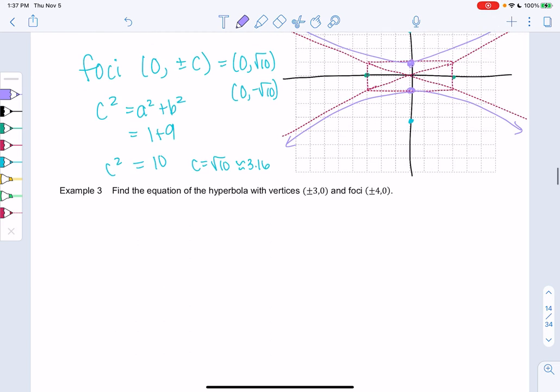So we have a hyperbola with vertices at plus or minus 3, 0 and foci at plus or minus 4. I don't really need the graph, but it does at least help me know if it's vertical or horizontal. So if my vertices are at 3 and negative 3 on the x-axis, that means I have one that goes this way, side to side. And my foci are at 4, not that that affects the graph.